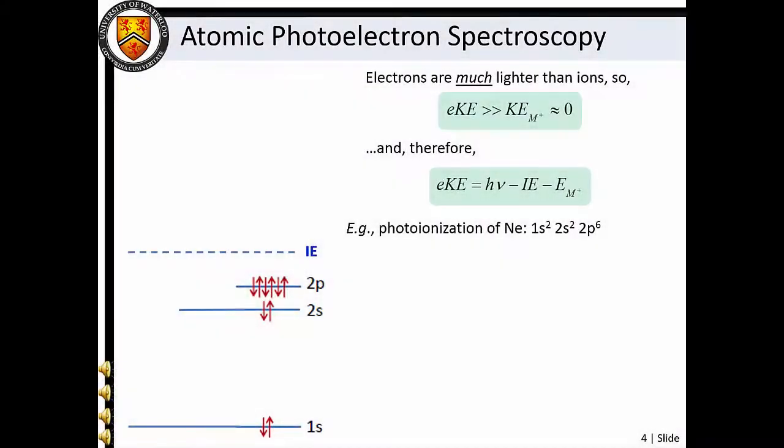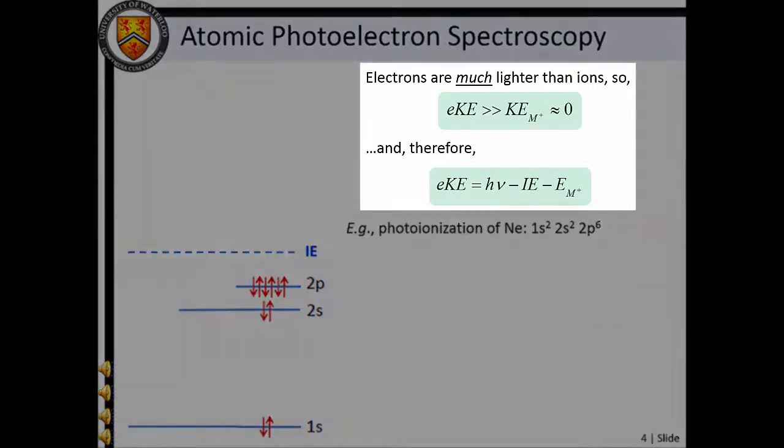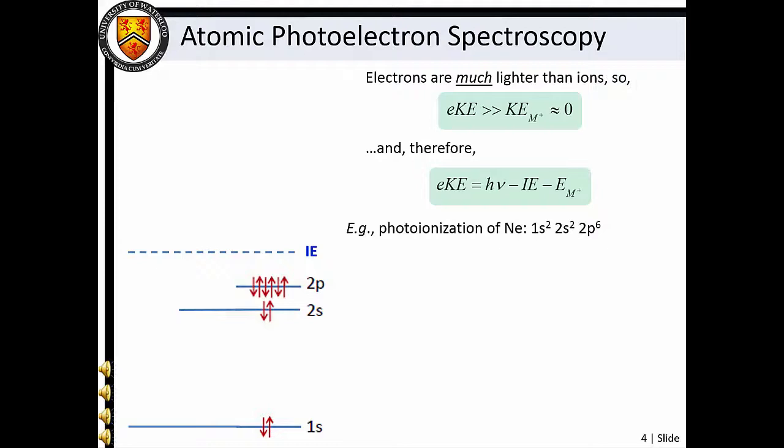Conservation of energy and momentum dictates that when a photoelectron is ejected from our atom or molecule, the nascent ion must recoil in the opposite direction. Owing to the huge mass imbalance between the ion and photoelectron, we can make the assumption that the ion's kinetic energy is negligible, thereby simplifying our treatment of the photoionization process. As a result, we can view the photoelectron kinetic energy as being the difference between the photoexcitation energy and the sum of the ionization energy and ion internal energy.